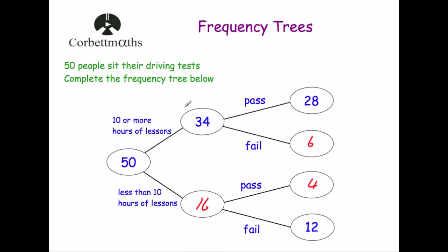As you can see, the frequency tree lays out the information: you start with how many people there were — 50 — then you go on different paths depending on the options. The first option was 10 or more hours of driving lessons, the other was less than 10 hours, and then we have the information on passing and failing.